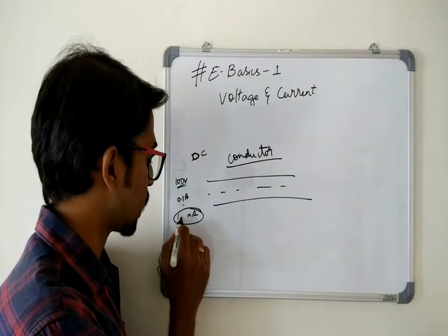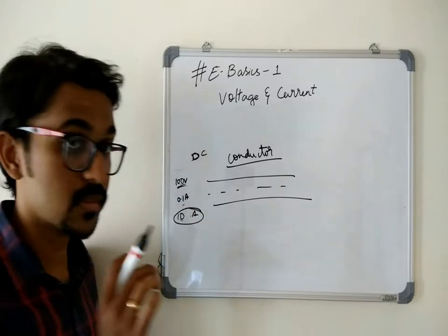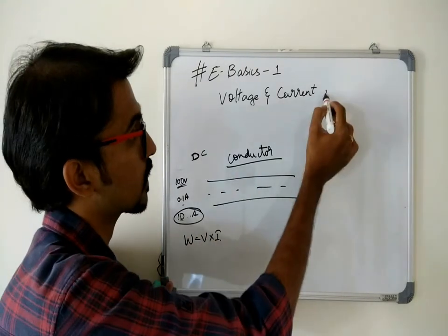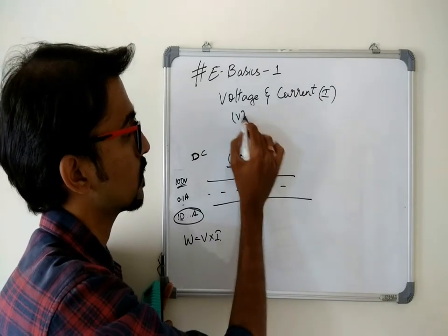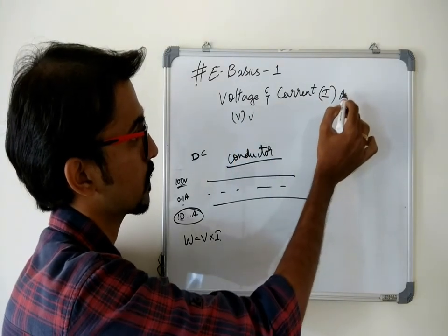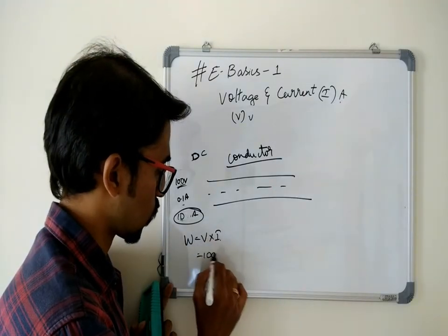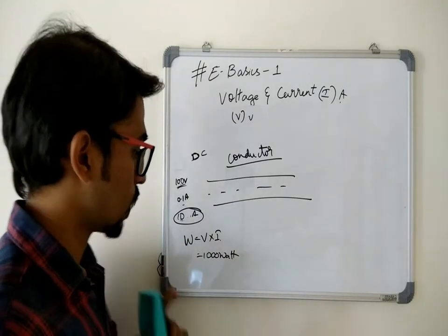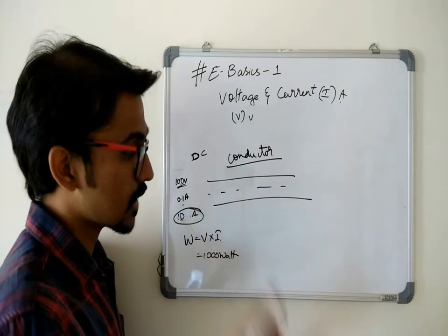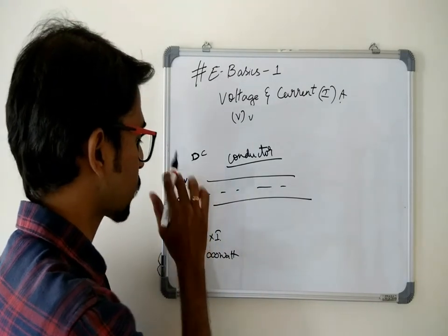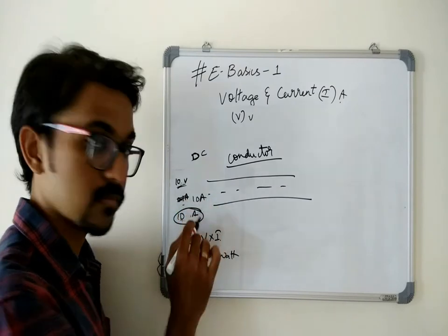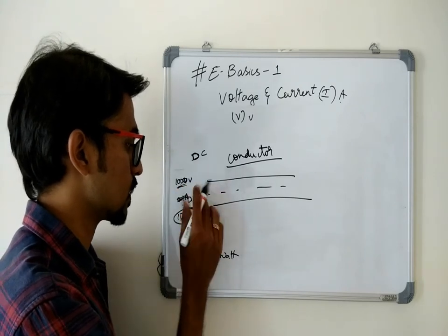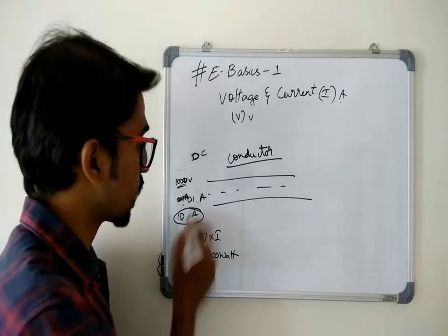100 volts at 1 milliamp, that's kind of not dangerous. I don't think 1 milliamp will hurt anything. But if you take 100 volts at 10 amps, that is 1000 watt. Watt equals to volt into current. Current is represented by I. Watt is W, V, this is in volts, and this is in amps. So V into I, that is 1000 watt which is quite dangerous and can kill people.